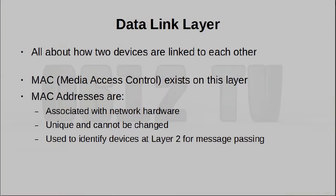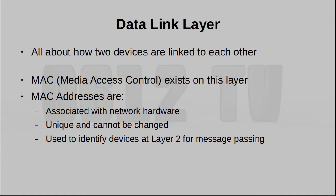The next layer up is the data link layer, which describes how two devices are actually linked to each other. Moving a little bit up from the physical layer, we're now concerned about how devices actually discover each other, how they start a conversation, and get the information flowing between these two devices. This is used by protocols like MAC, also known as Media Access Control. You may have heard of a MAC address — this is actually the physical address associated to individual pieces of hardware. It is a unique identifier and cannot be changed, and at layer 2, that is how information is actually passed from one device to another. Messages can only go from one physical address to another if we're talking about communications on this layer.